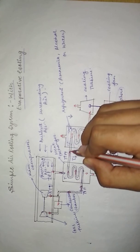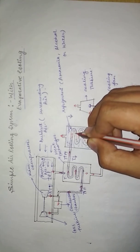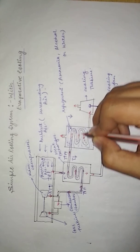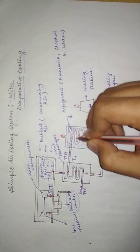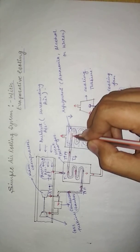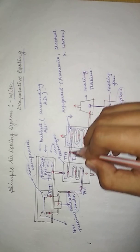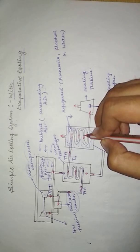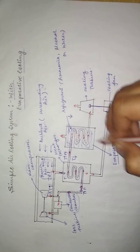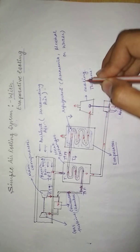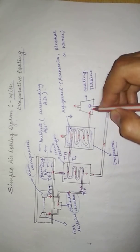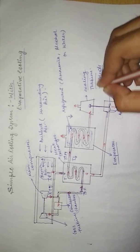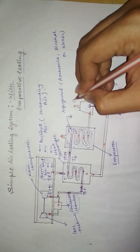Since the temperature of this refrigerant is low, heat exchange takes place in the evaporator. The air in the pipe, which was already cooled in the heat exchanger, cools down further because the evaporator temperature is even lower. The air further cools down in the evaporator and is then sent into the cooling turbine, where it expands and is delivered to the cabin.